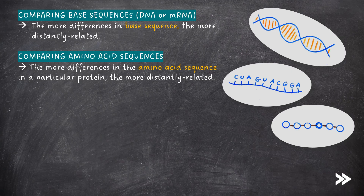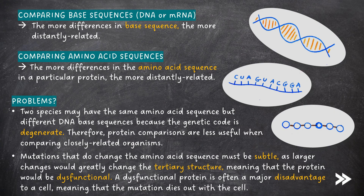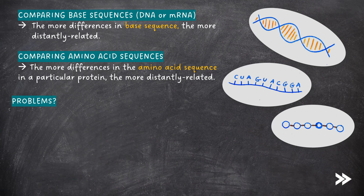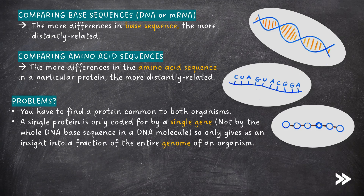However, using amino acid sequences to determine how closely related two organisms are does have a few limitations. Two species may have the same amino acid sequence but different DNA base sequences because the genetic code is degenerate. Therefore, protein comparisons are less useful when comparing closely related organisms. Mutations that do change the amino acid sequence must be subtle, as larger changes will greatly alter the tertiary structure, making the protein dysfunctional — a major disadvantage, meaning the mutation dies out with the cell. Another disadvantage is that you have to find a protein common to both organisms. Finally, a single protein is only coded for by a single gene, not the whole DNA base sequence, so this only gives us insight into a fraction of the entire genome of an organism.